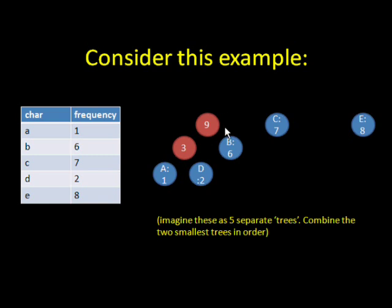Now, again, I will take the two least valued trees. In this case, now it's C and E that are left that have a lesser value than the tree with nine. So I will combine them.